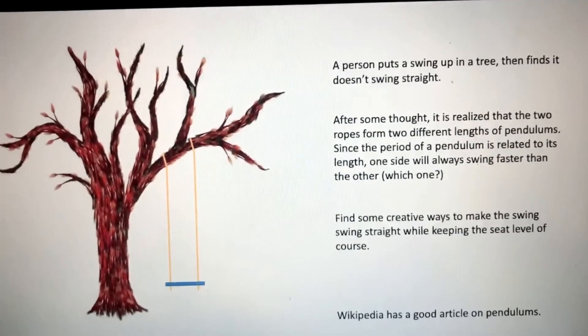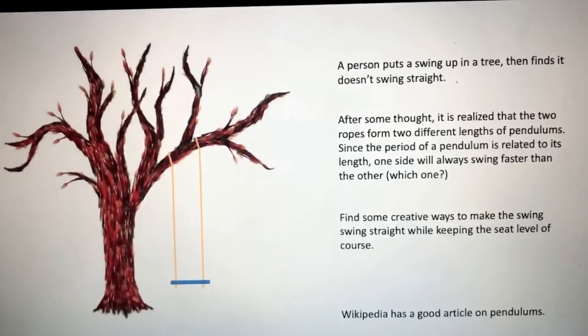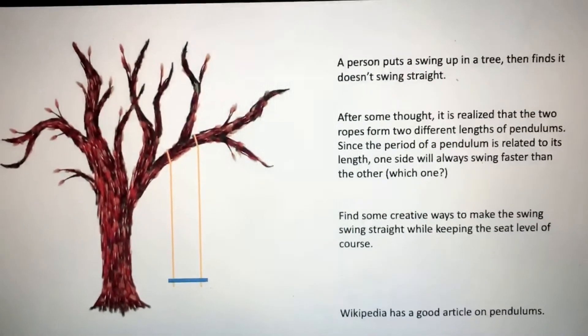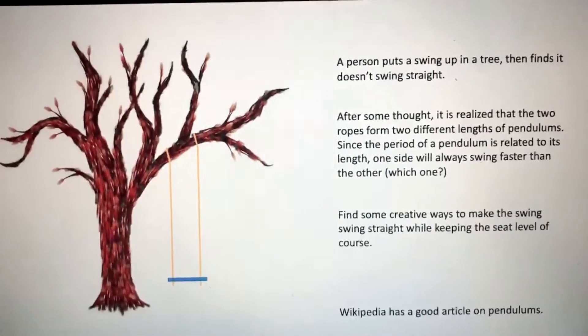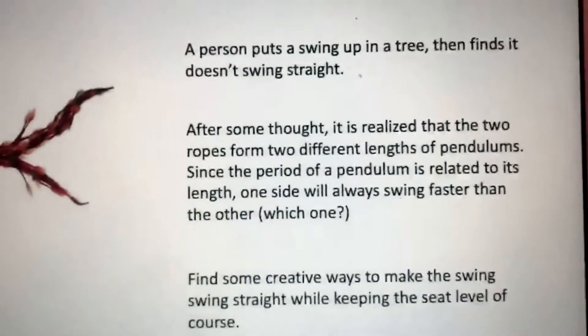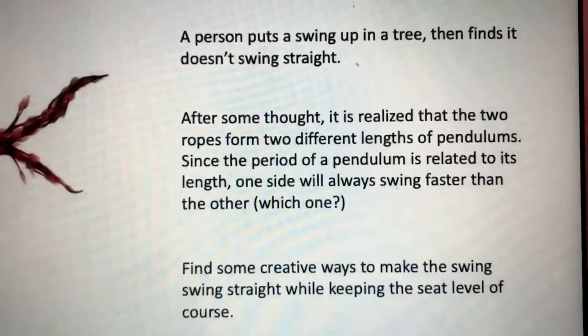So here's our tree and you can see the swing. You can see that the left side has a shorter rope than the right side in order to make the seat level. So here's the problem: when it swings,